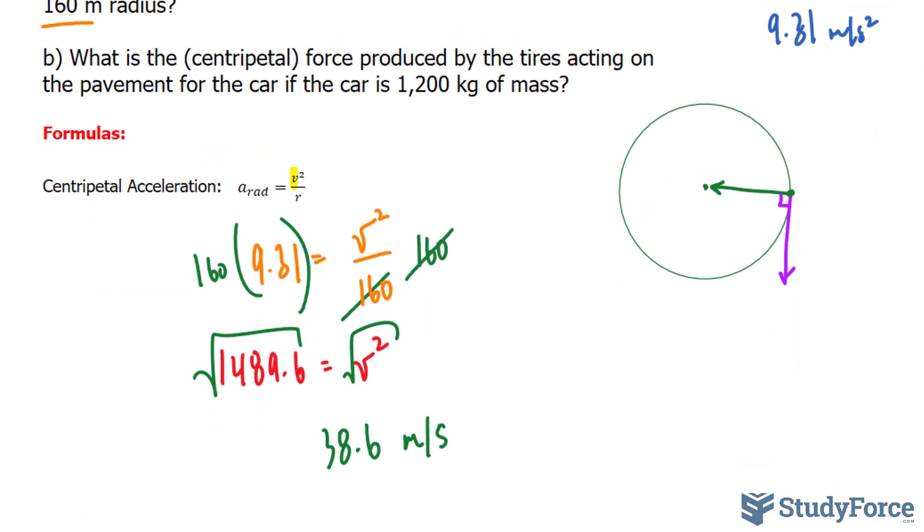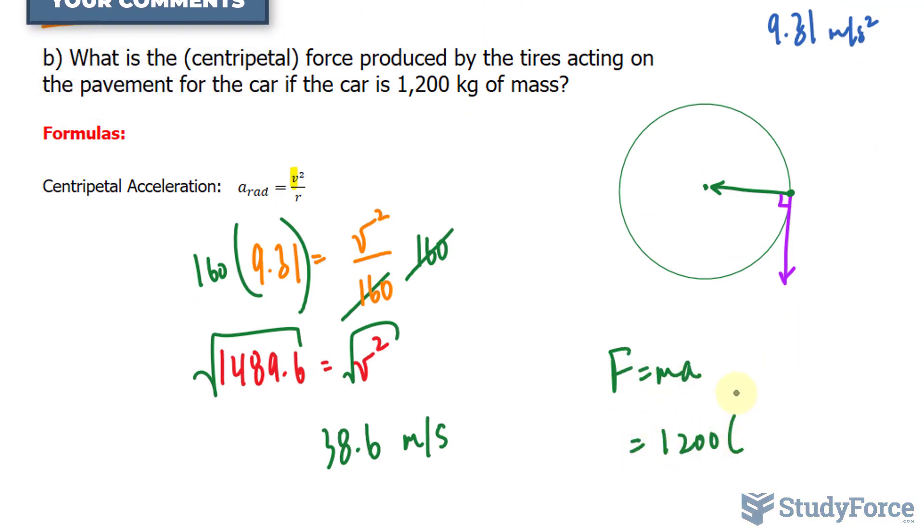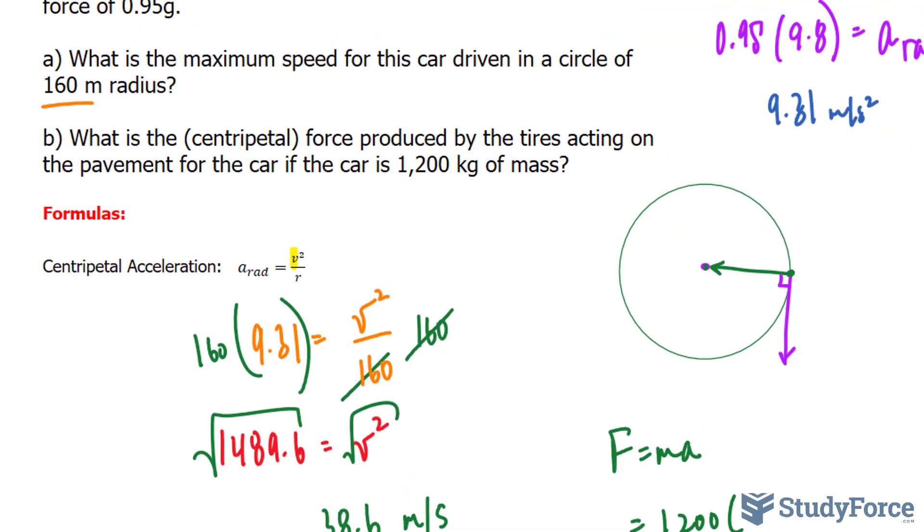We'll be using Newton's second law: F equals ma. The mass is given as 1,200, and the acceleration, the one going towards the center of the circle, we found to be 9.31.